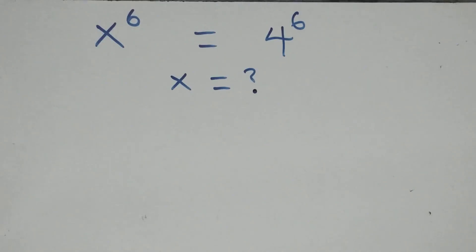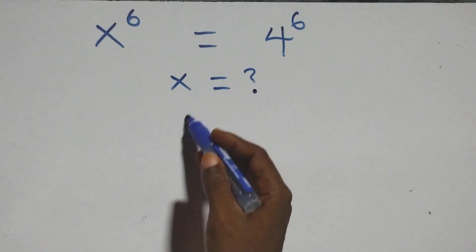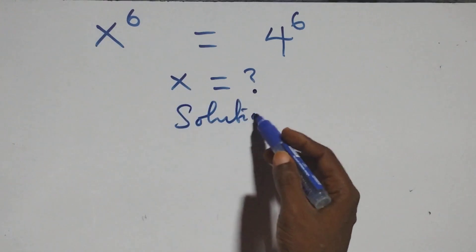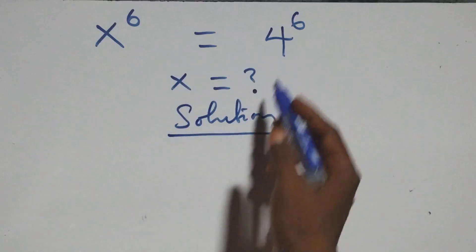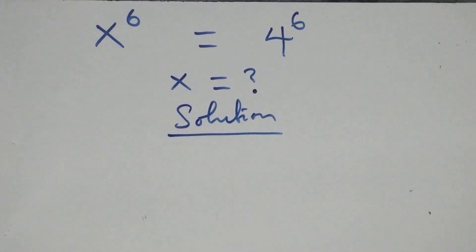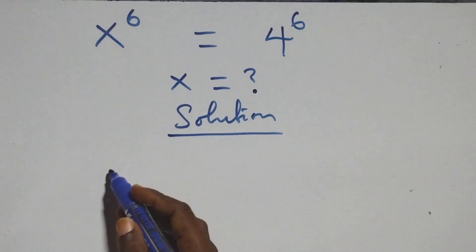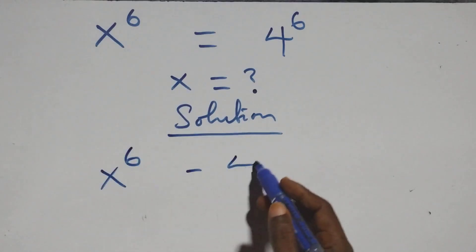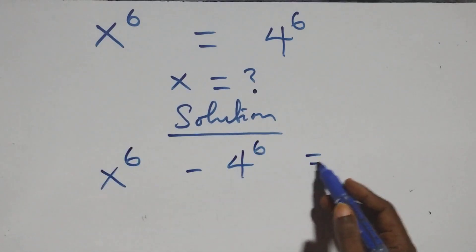Hello, you're welcome. How to solve this nice exponential equation. What we have here is x raised to power 6 equals to 4 raised to power 6. We take 4 raised to power 6 to the left hand side and we have x raised to power 6 minus 4 raised to power 6 equals to 0.